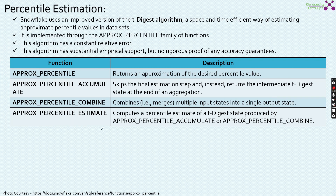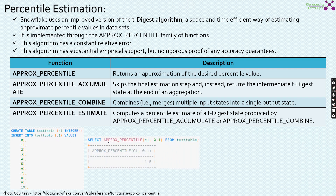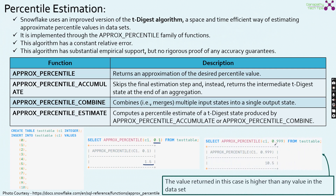Please go through the descriptions by pausing the video. Coming to the example — here you can see we are creating a table named test_table with C1 as integer, and inserting close to around 11 records (since it starts with 0, there are 11 records inserted). If you do APPROX_PERCENTILE(0.1) from test_table, it returns the value of 1.5. If you do APPROX_PERCENTILE(0.999), it returns the value of 10.5 — higher than any value in the data set — which is evident given there is a constant relative error with percentile estimation.